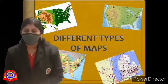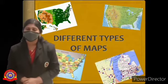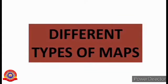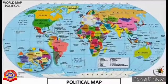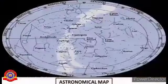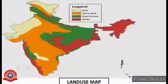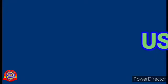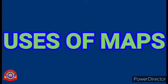Of course not. Different types of maps are used for different purposes. Let's learn about different types of maps: political map, military map, historical map, astronomical map, land use map, and weather maps. Now let's learn about the uses of maps.